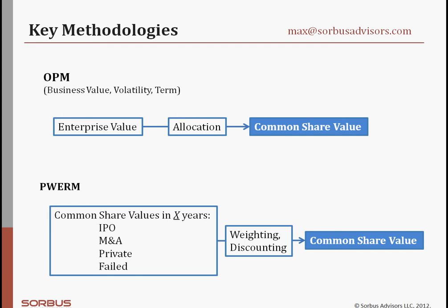The second methodology commonly used, and quite frankly completely different, is the probability-weighted expected return method. This is essentially a scenario analysis where scenarios typically considered include an IPO, a sale of the company, a scenario where the company continues its operations as an independent private company, and a fourth scenario where the company fails. Those four scenarios may lead to different values for common shares. The common share value is calculated under each scenario and then discounted back to present value to account for the time value of money.